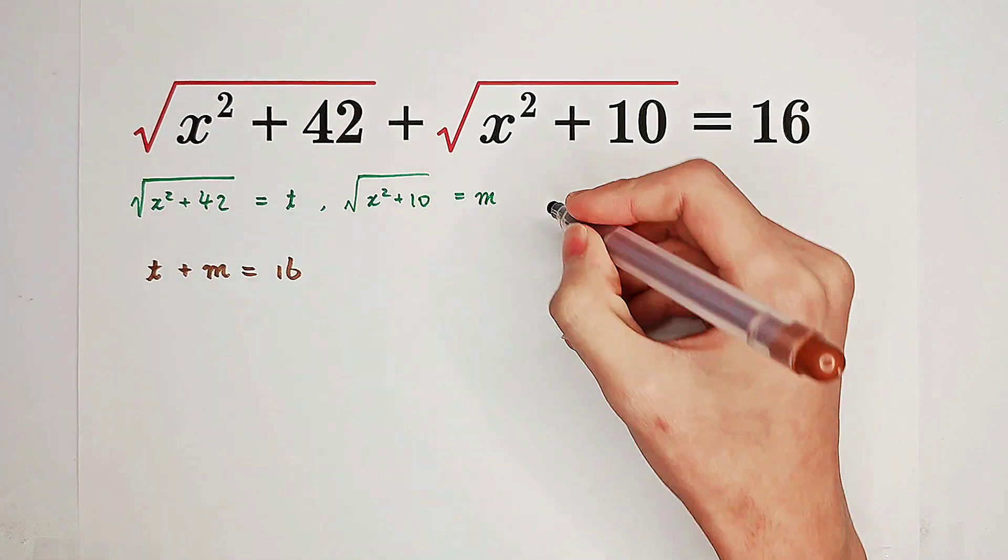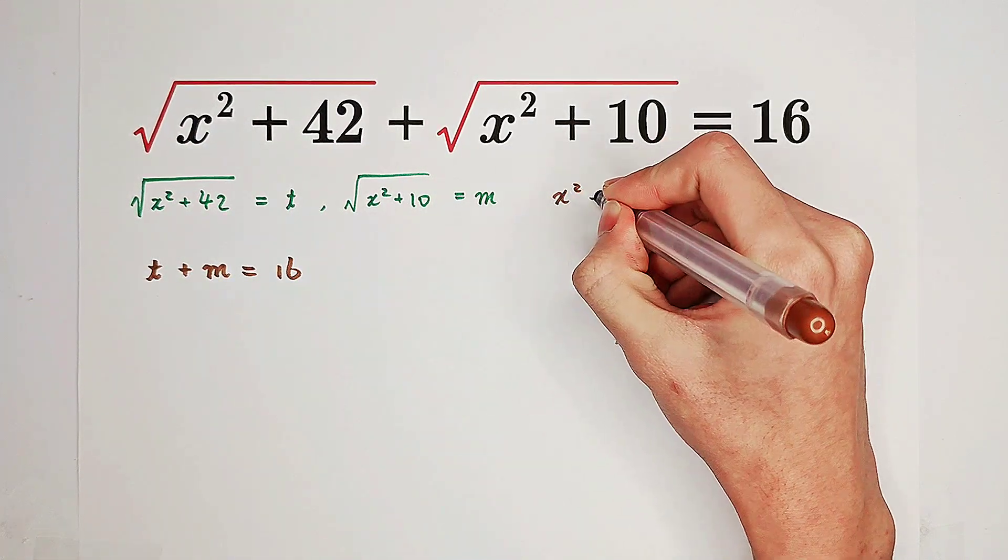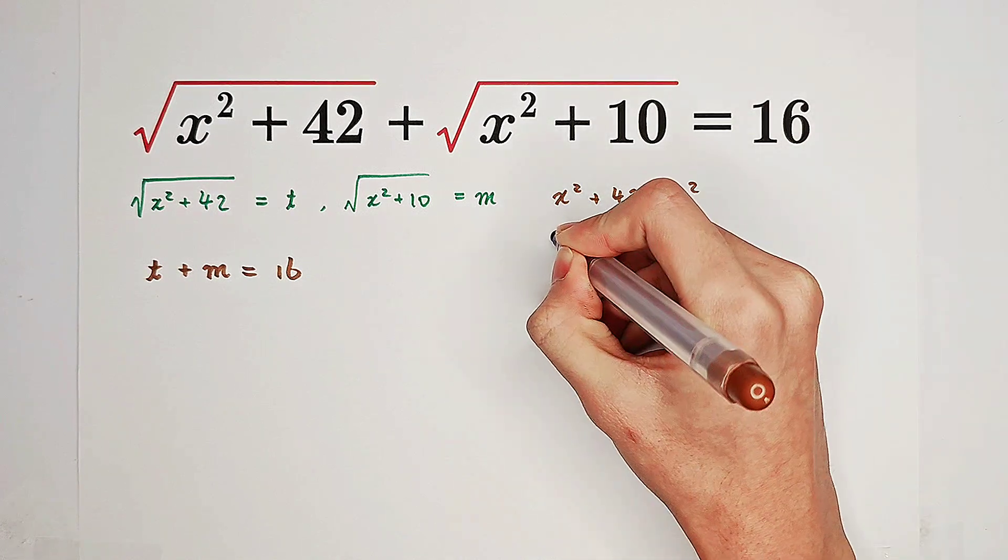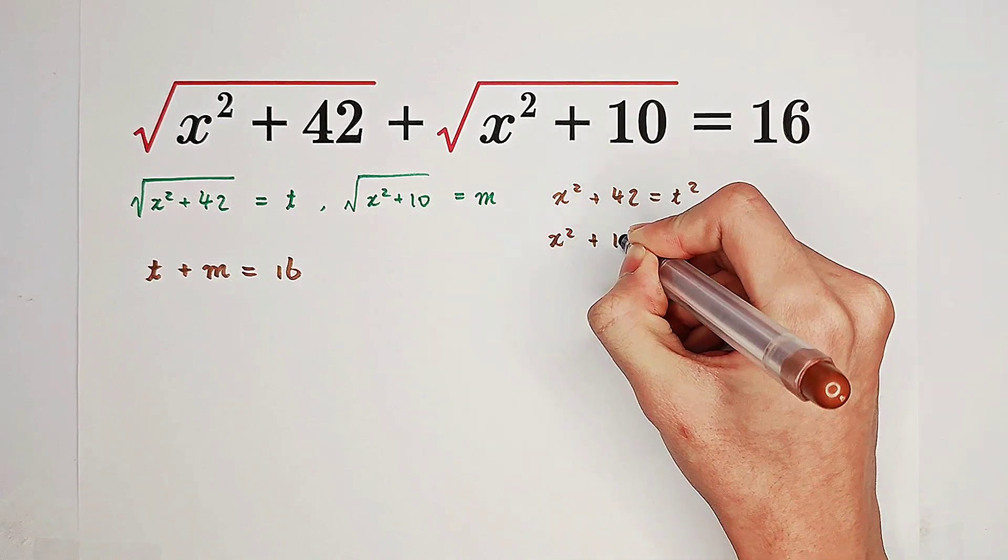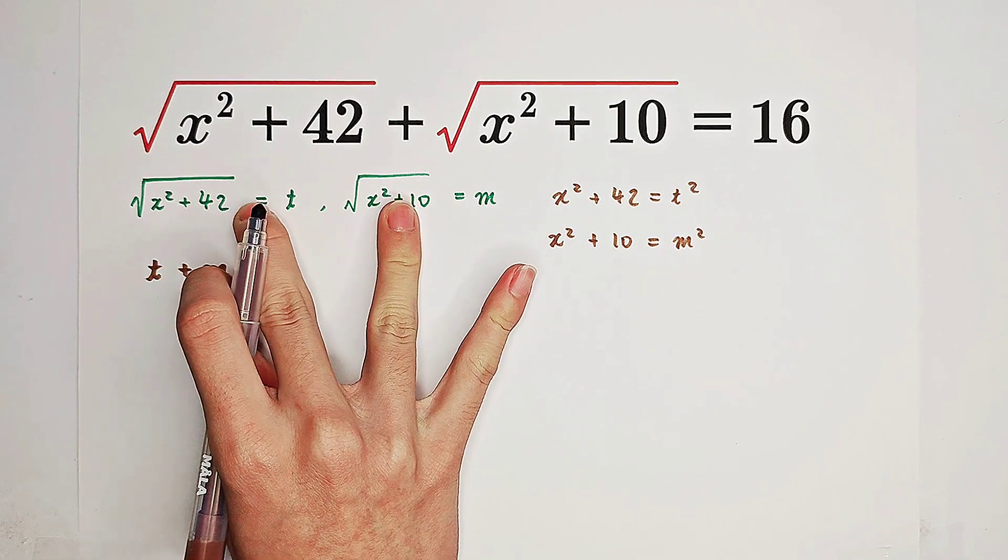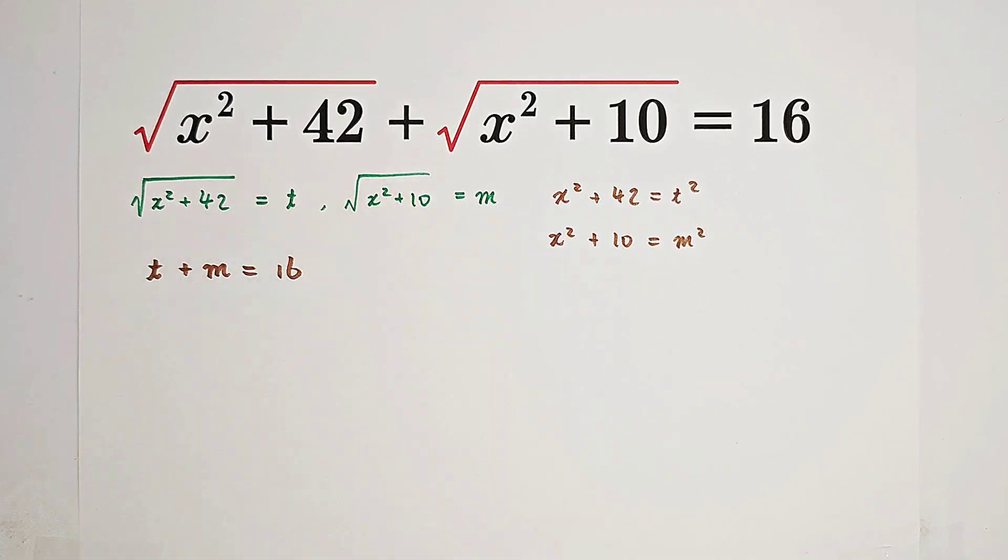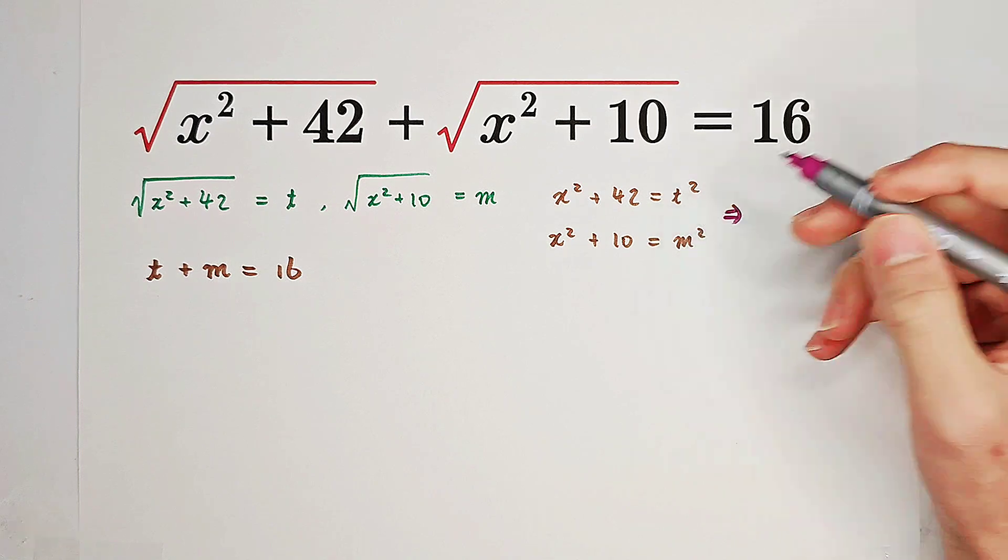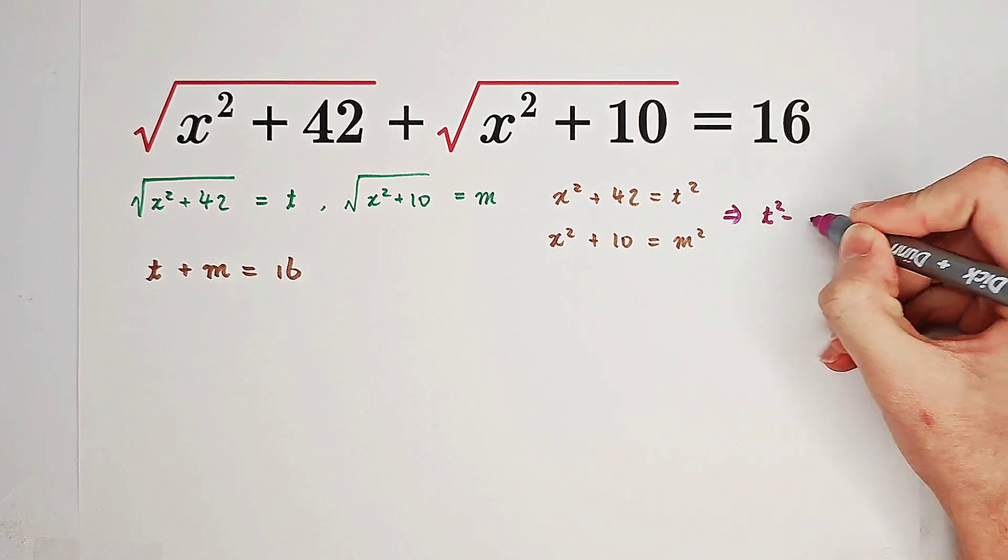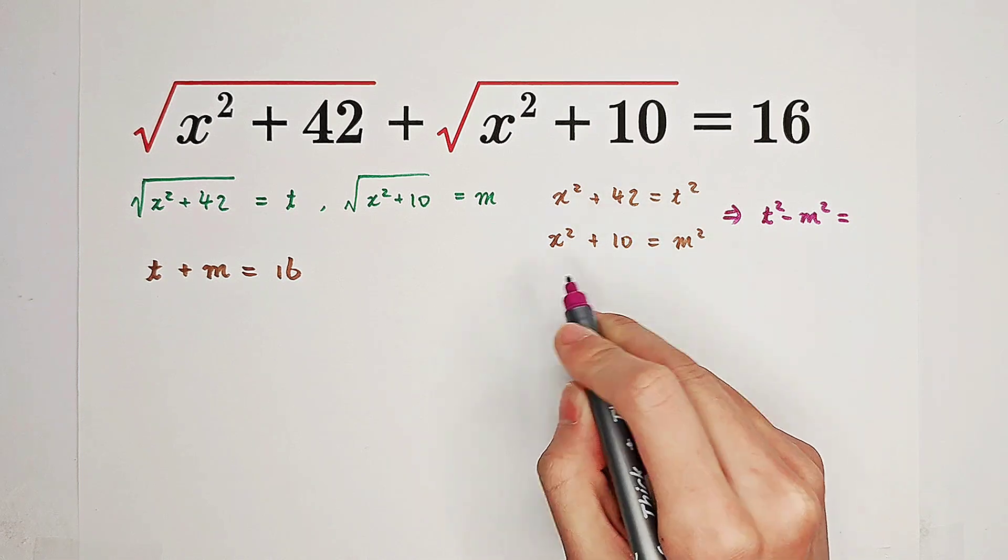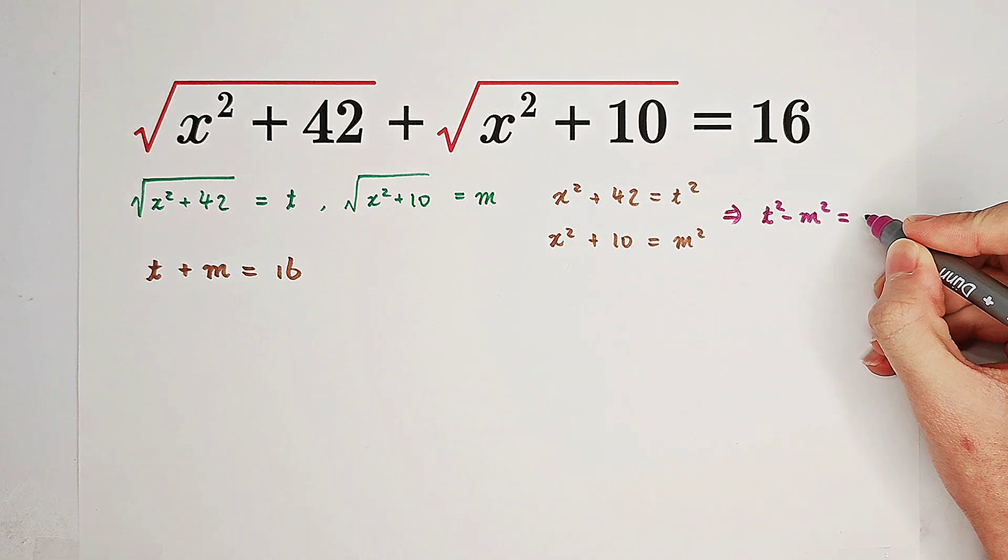Because x squared plus 42 is t squared, and x squared plus 10 is m squared, you just square both sides on these two equations. So what we can do is subtract the second one from the first one, and you can get t squared minus m squared equals x squared plus 42 minus x squared minus 10, which is 32.